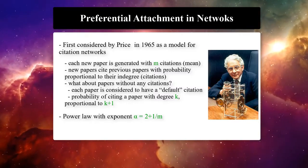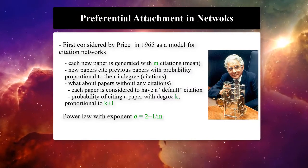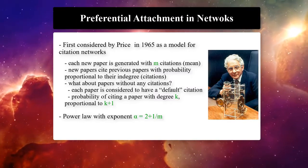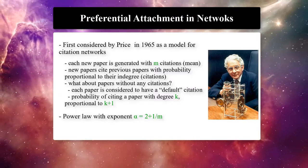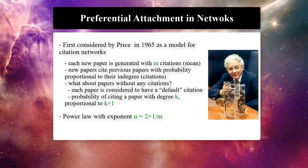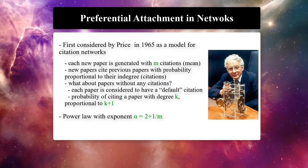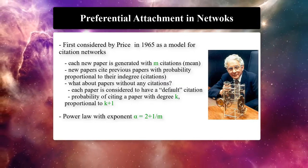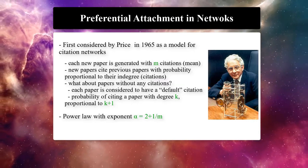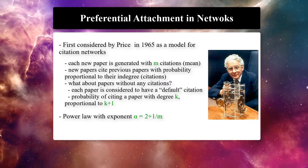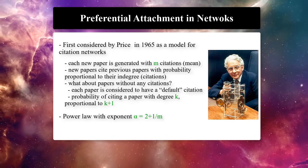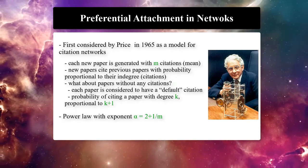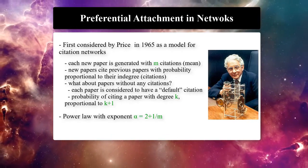In a later paper in 1976, Price proposed the mechanism to explain the occurrence of a power law in citation networks, which he called cumulative advantage. But today it is more commonly known as preferential attachment.